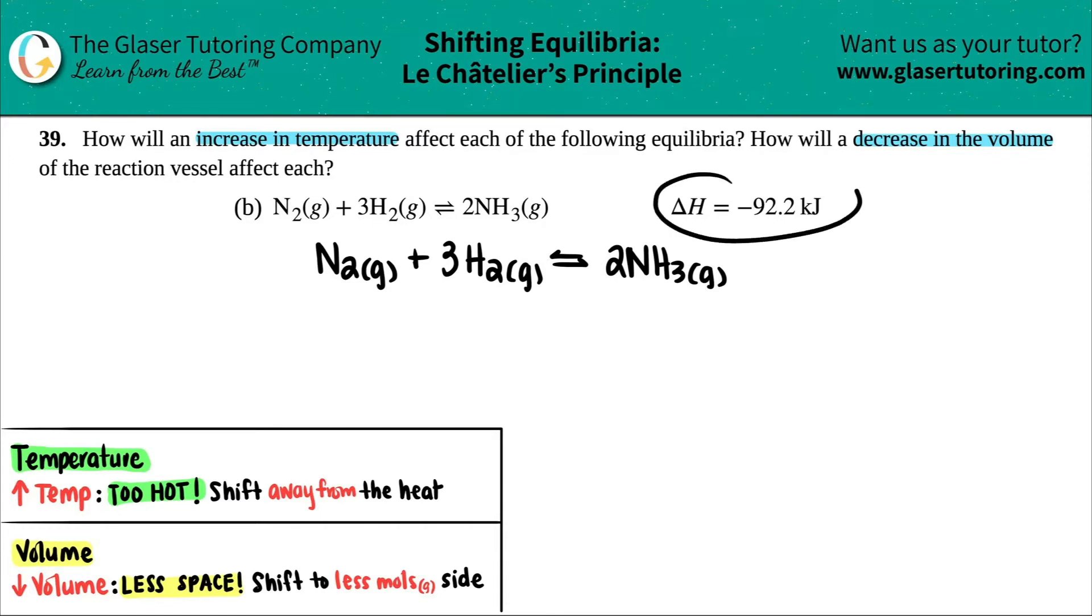In order to make it easier, what I'd like to do is take this delta H value and just talk about it in terms of heat. Now remember when we did enthalpy, we said that negative values are always exothermic. Does this matter that it's negative 92.2? Absolutely not. I just care that it's a negative value. And remember, exothermic means that you are releasing heat.